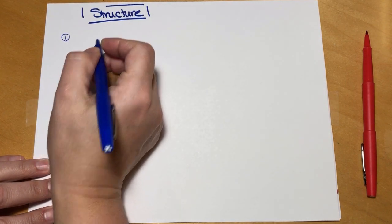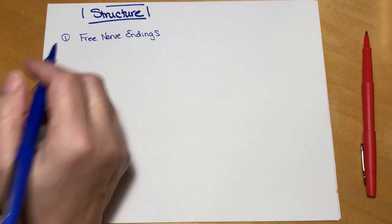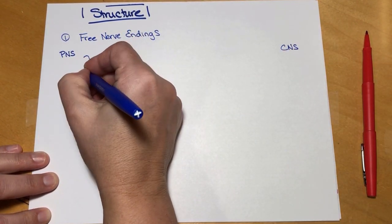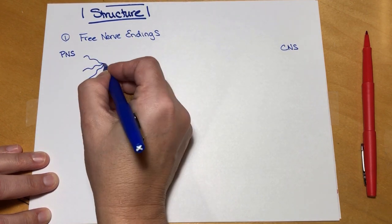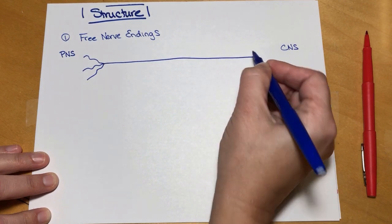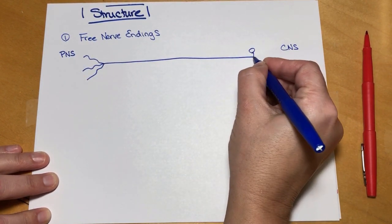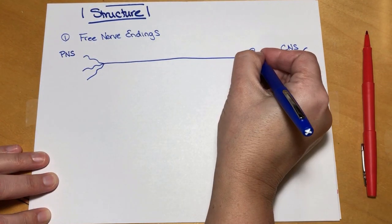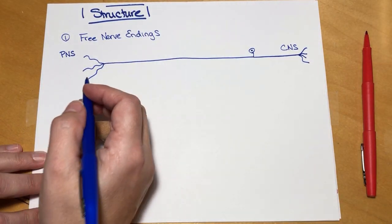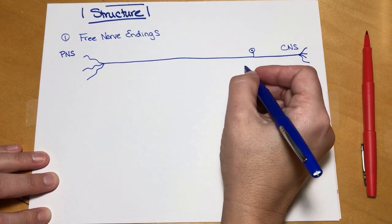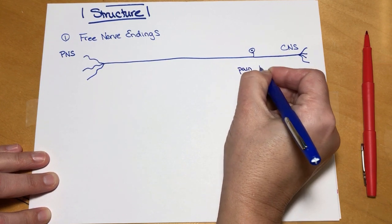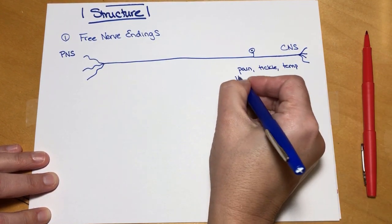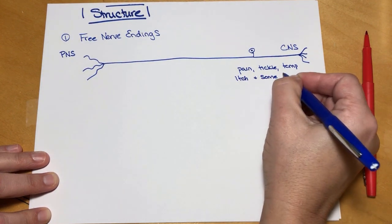There are three different types of structures for our receptors. The first one is called free nerve endings. If we have the PNS on this side and the CNS on that side, a receptor with the structure of free nerve endings basically just has its dendrites hanging out in the PNS, with the terminal end in the CNS and the cell body in between. The types of sensations that would stimulate a free nerve ending receptor would be pain, tickle, temperature, itch, and some types of touch.